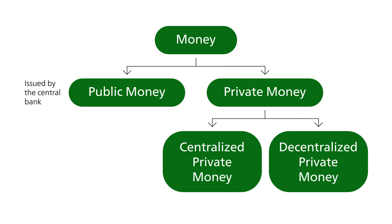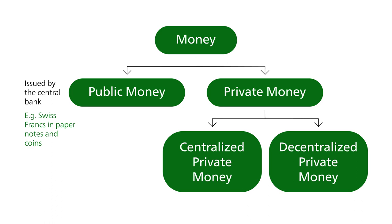In Switzerland, the only form of public money available to private individuals are the Swiss francs in paper notes and coins. All other forms of money that we use, including bank deposits, credit card spending limits, or PayPal balances, are actually private money. In particular, all forms of digital money currently used are private money.